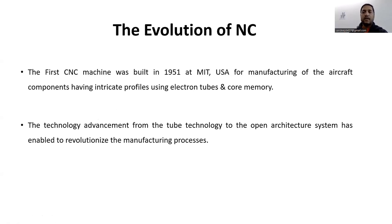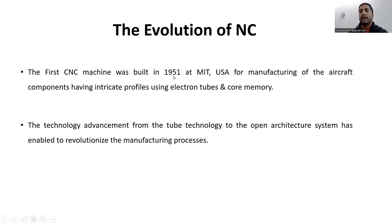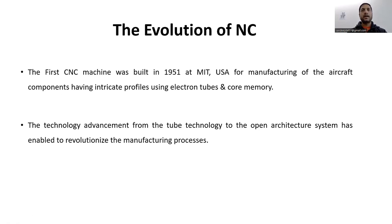Now let us look at the evolution of NC machine tools. The first CNC machine was built in 1951 at MIT, USA, for manufacturing aircraft components with intricate profiles, using electron tubes and core memories. Numerical control was born in 1947, when John C. Parsons of Parsons Corporation, Traverse City, Michigan — a manufacturer of helicopter rotor blades — could not make his templates fast enough.